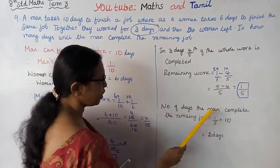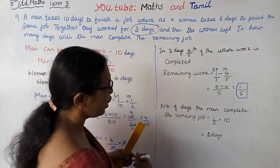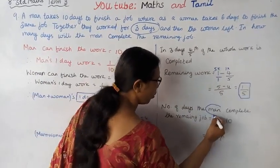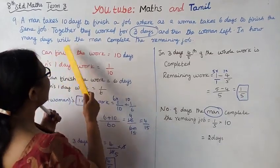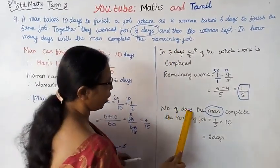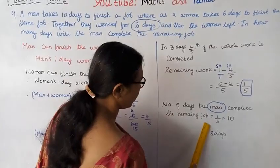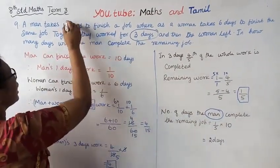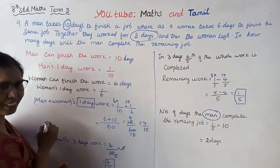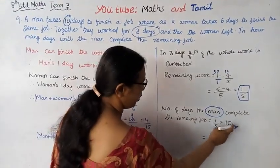Number of days the man completes the remaining job: The man takes 10 days for the whole job, so 1/5 times 10 equals 2 days.